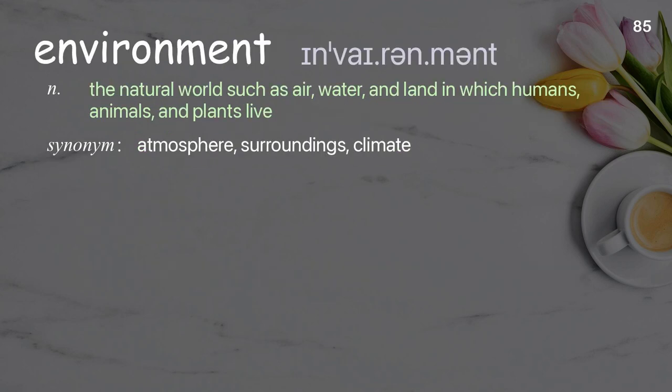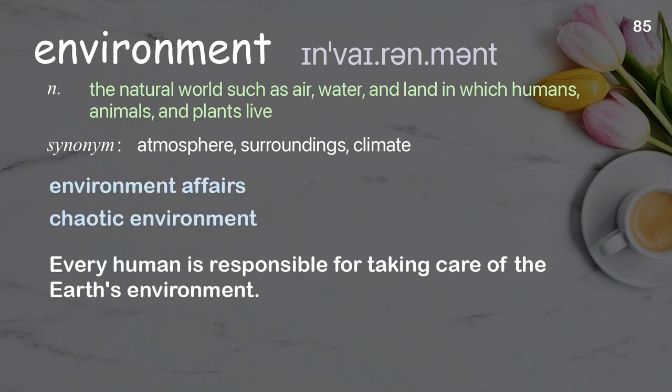Environment: the natural world, such as air, water, and land, in which humans, animals, and plants live. Examples: environment affairs, chaotic environment. Every human is responsible for taking care of the earth's environment.